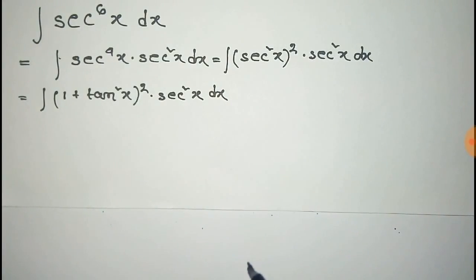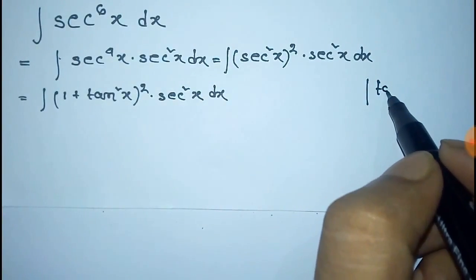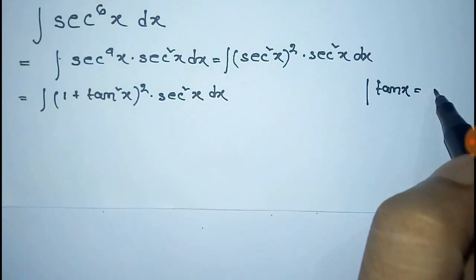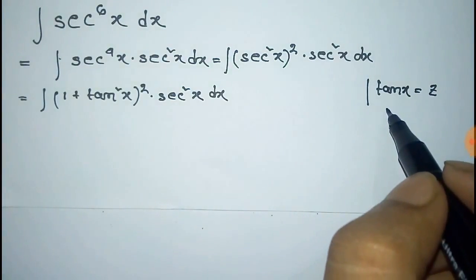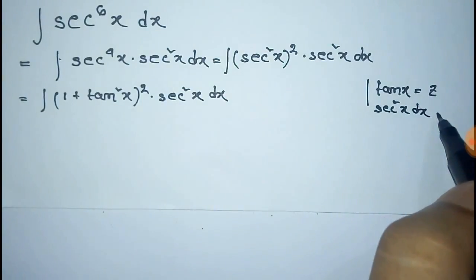Now take tan x equal to z. So the derivative of tan x, that is sec^2x dx, is equal to dz.